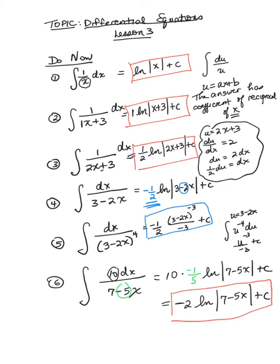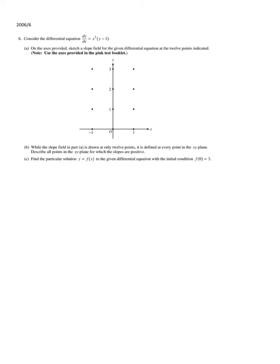Let's take a look at an AP free response you should have downloaded for your notes. This AP is from 2006, the last problem. It says: consider the differential equation dy/dx equals x squared times y minus 1. Part A asks us to sketch a slope field for the given differential equation at the 12 points indicated. I recommend writing down the coordinates of these points rather than doing this in your head.